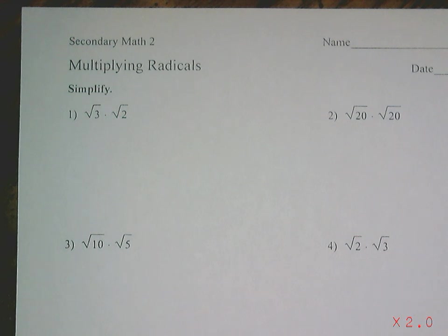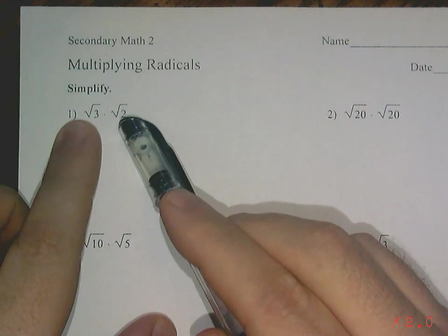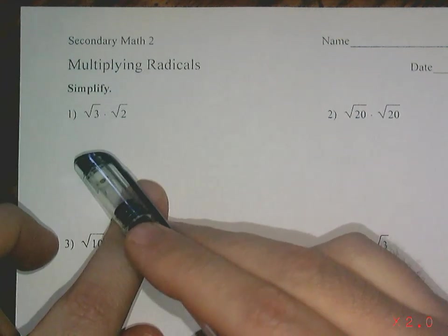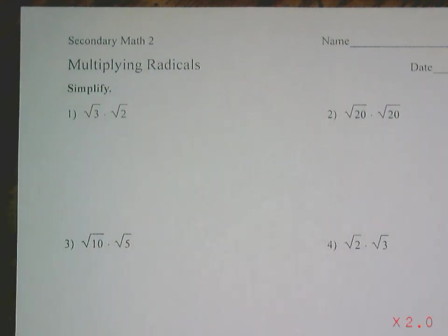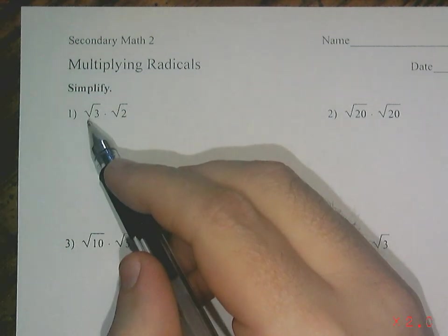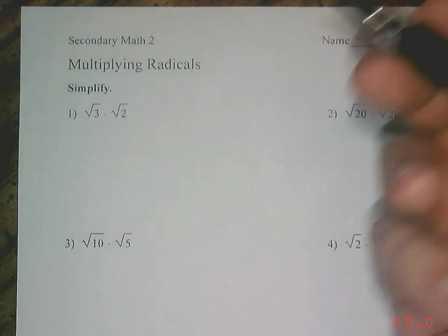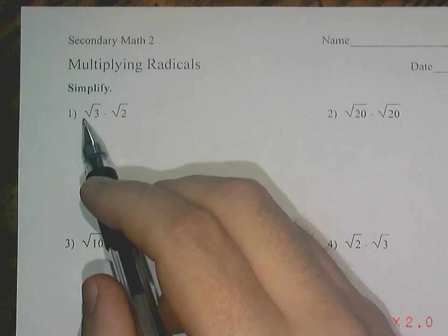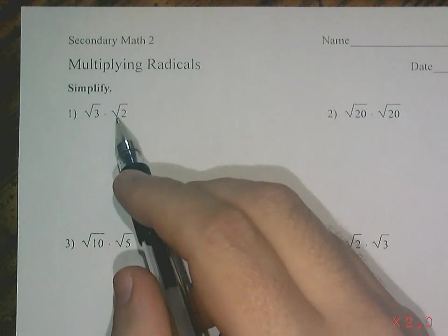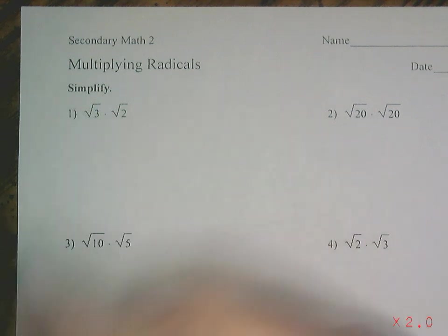When we're adding and subtracting radicals, they had to have the same root number in order to combine them, just like variables. But when multiplying, you can multiply these together no matter what - it doesn't matter what their base is anymore. When you multiply, they have to have the same root obviously, but you just multiply the numbers in the root together.